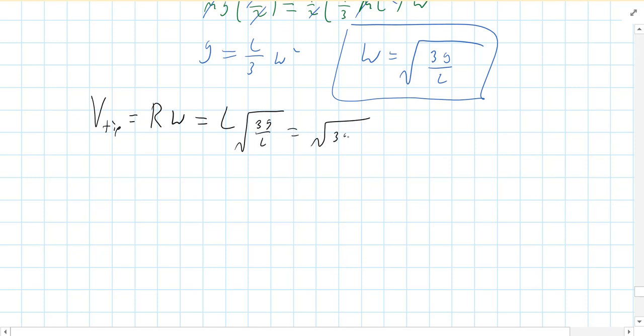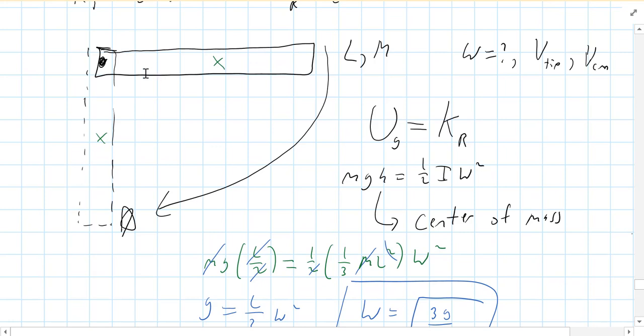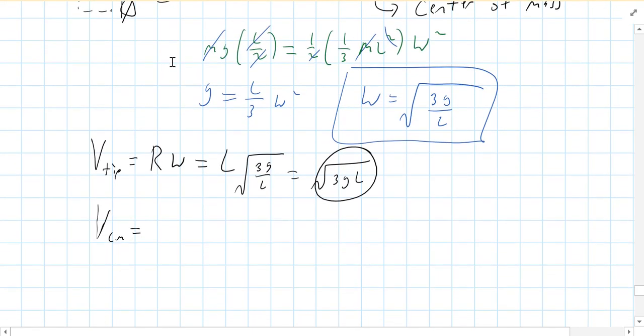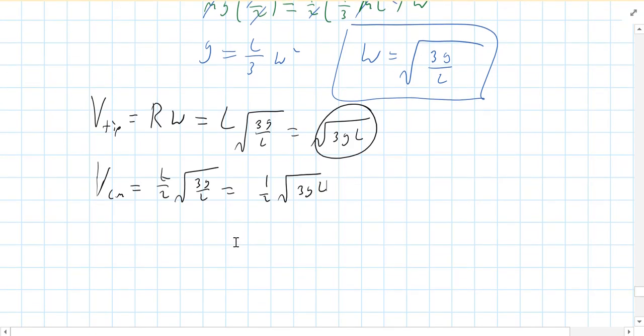How about the velocity of the center of mass? So, it would be similar, but it would be half the speed because you've got half the radius. So, there you go.